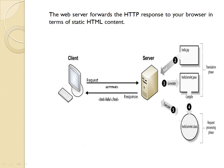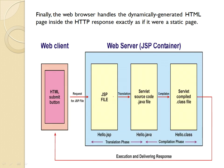Finally, the web server forwards the response back to the browser or client that made the original request. As shown in the diagram, the client requested to the server; the server checks if it is a JSP page and sends it to the JSP engine; the JSP engine converts it to Java code and compiles it to a class file; the servlet engine executes it and sends the HTTP response to the server; and then the server sends the required output back to the client. This is how the process works.